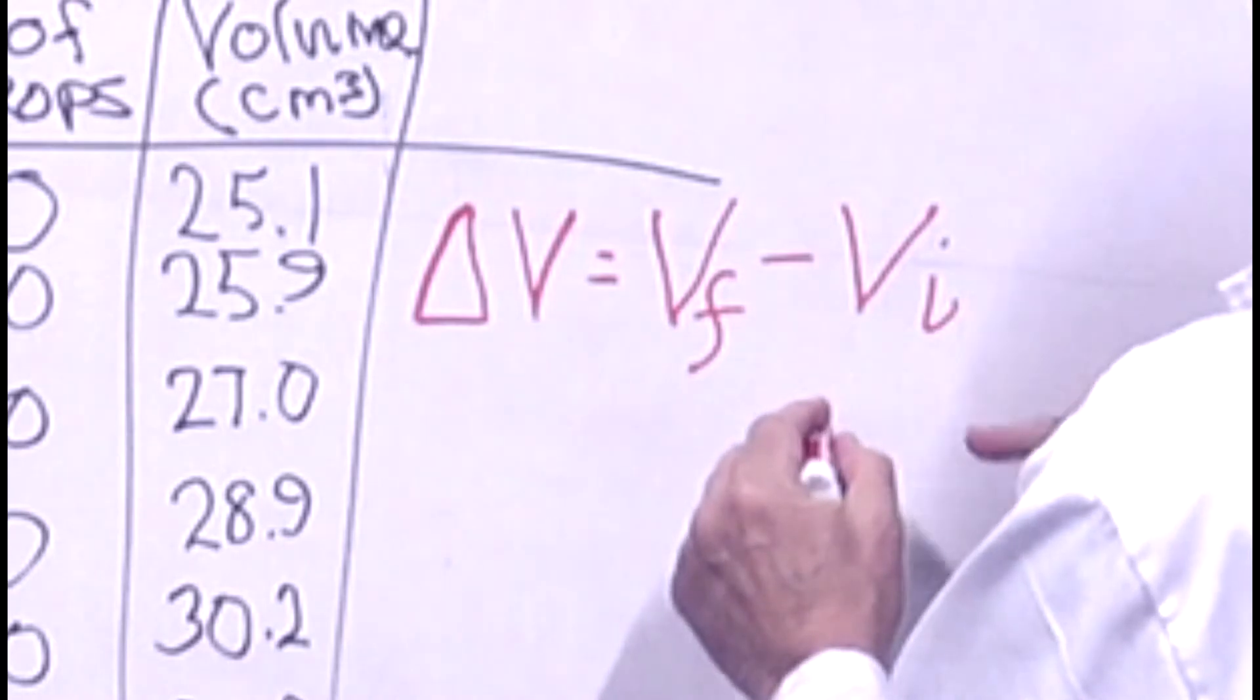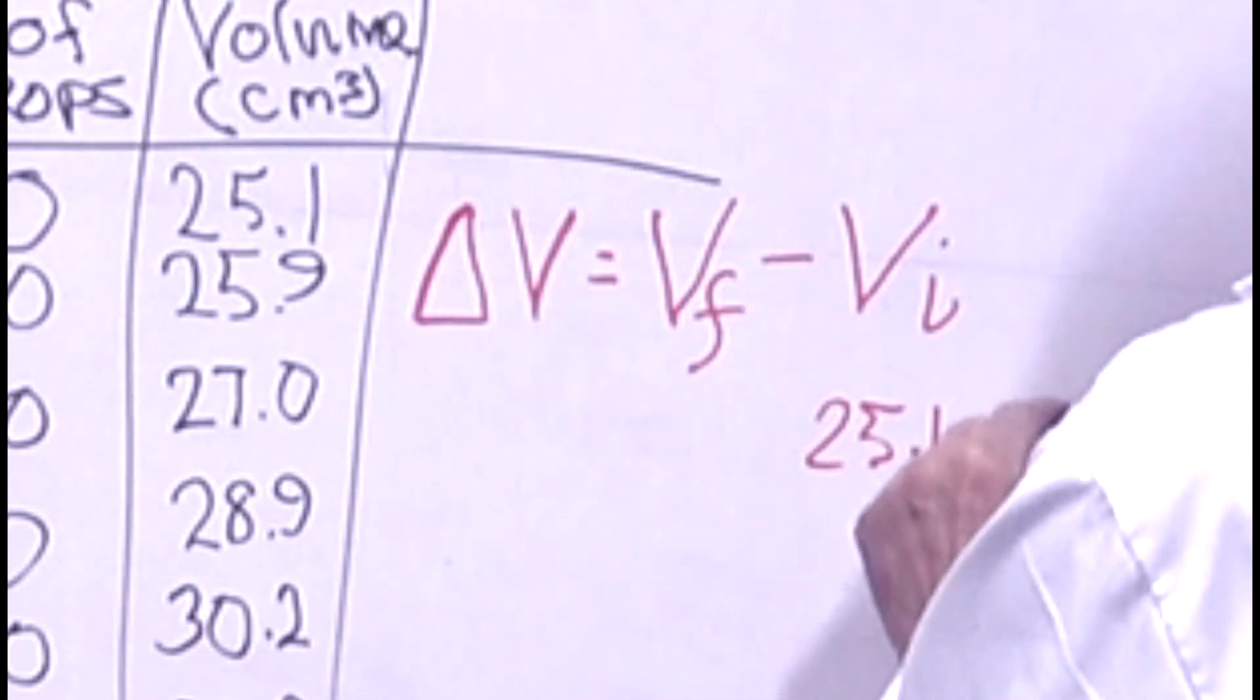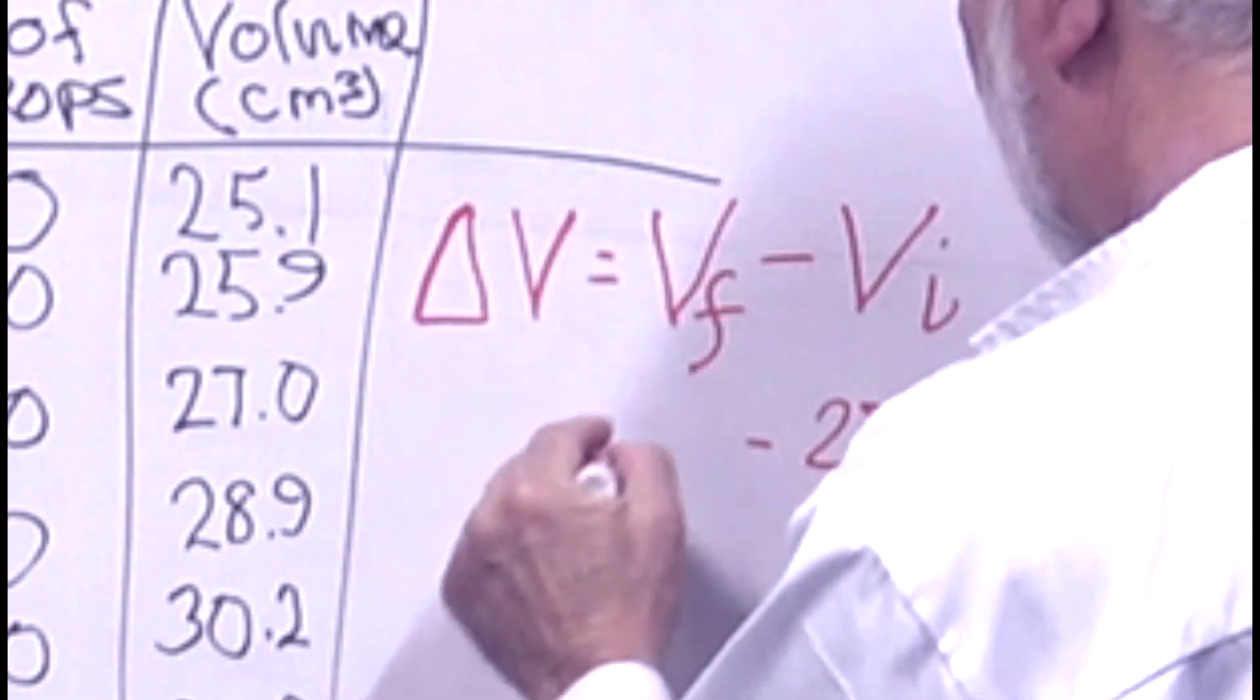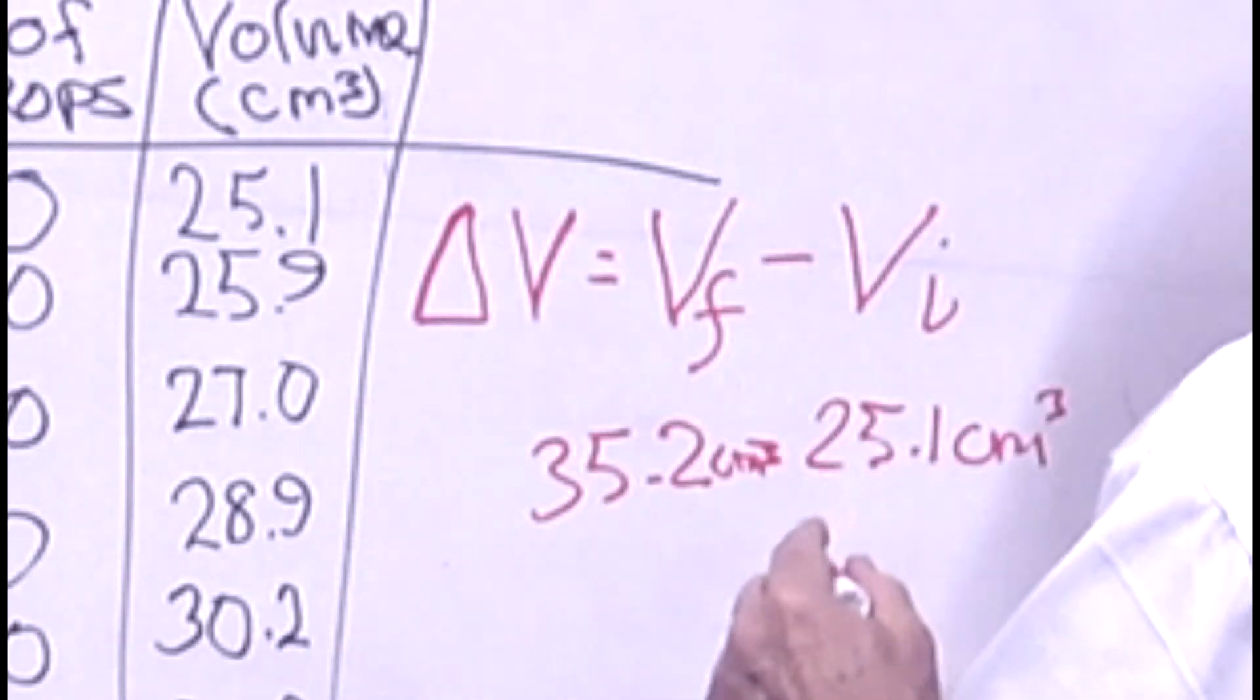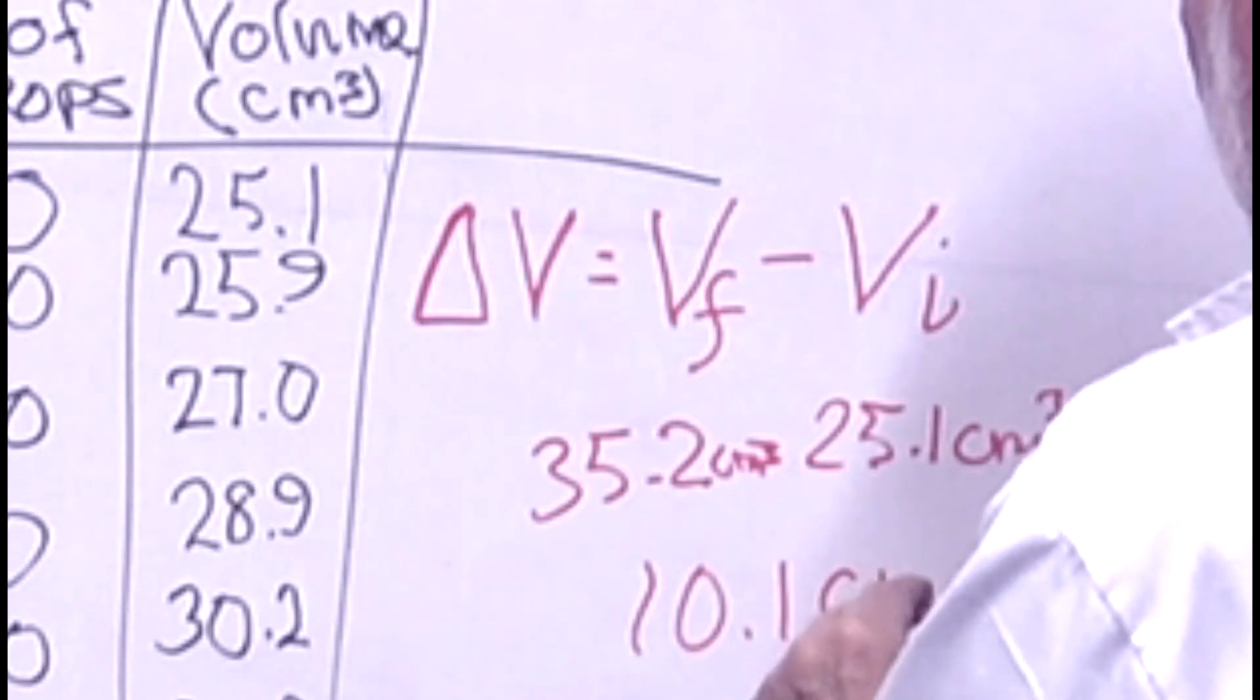My initial volume was 25.1 cubic centimeters. My final volume was 35.2 cubic centimeters. And the difference is 10.1 cubic centimeters.